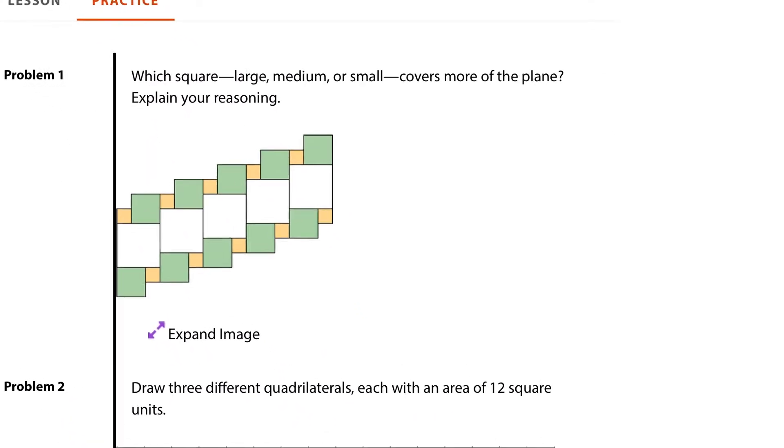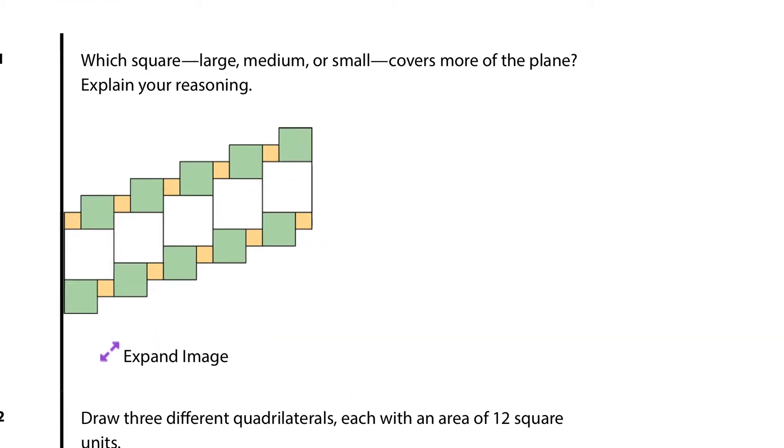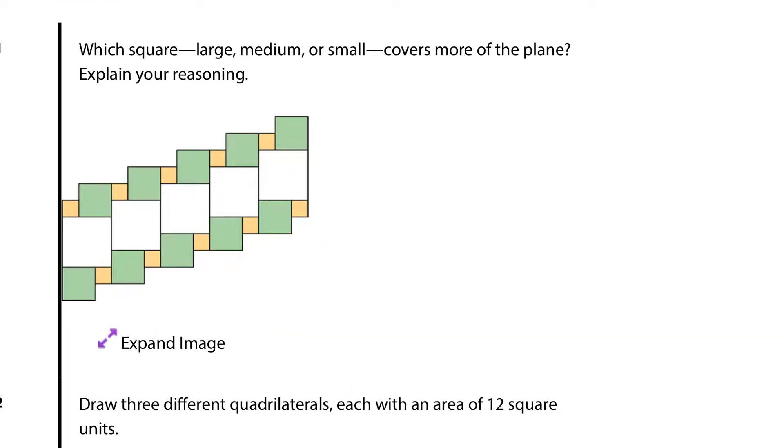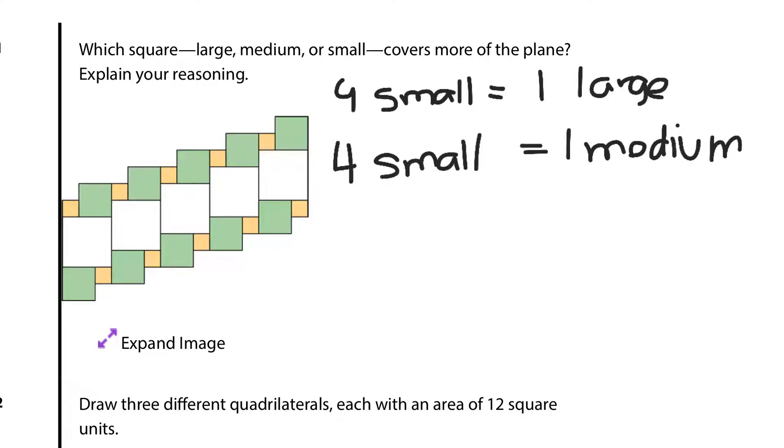And so as we go to question 1, which square - large, medium, or small - covers more of the plane? And explain your reasoning. Well, I know that 9 small equals 1 large. I also know that 4 small equals 1 medium.